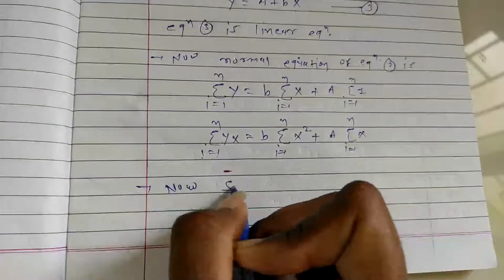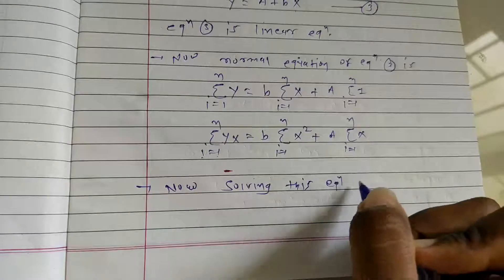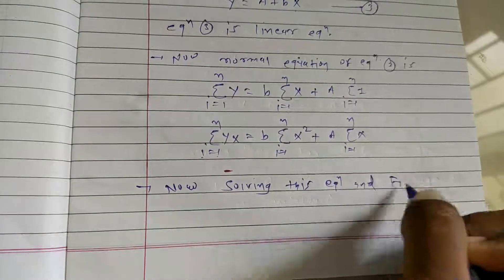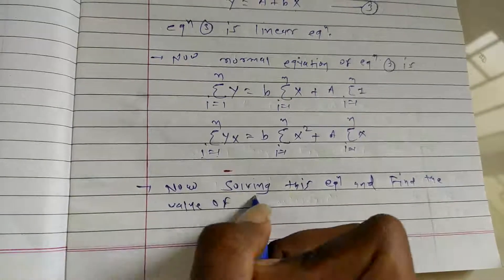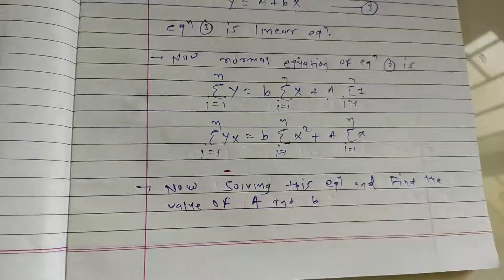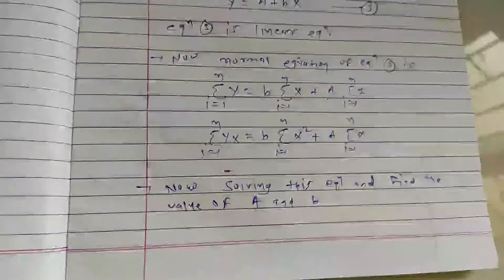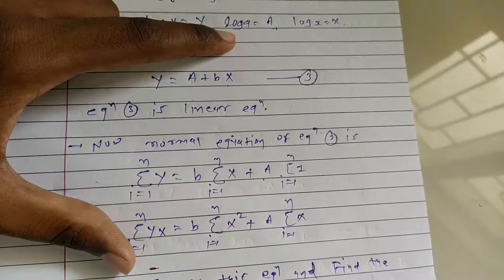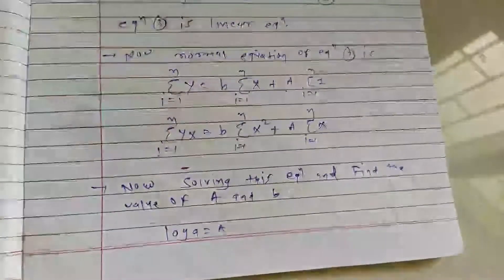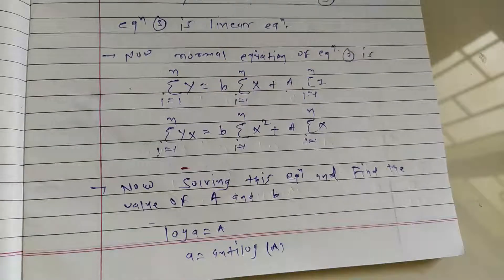Solving these equations, we find the values of capital A and capital B. From capital B we get small b directly. From capital A, since log A equals capital A, small a is equal to antilog of capital A.